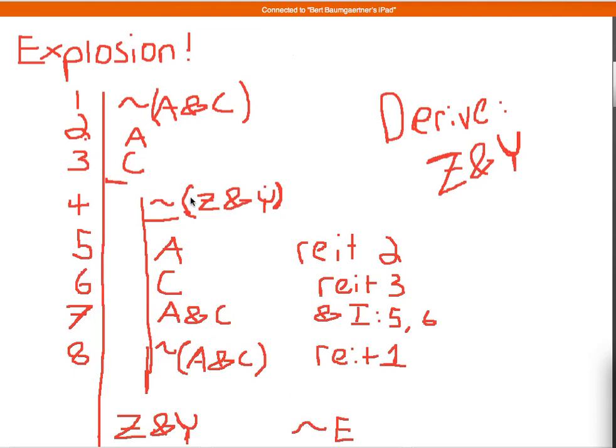And by the rule of negation elimination, I can then take my starting assumption and I can eliminate that. So I can have here 9 z and y by negation elimination. And I can just cite lines 4 to, come on, there we go, the subderivation 4 to 8.